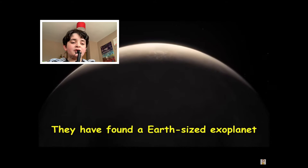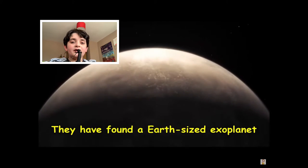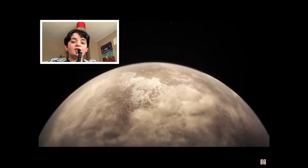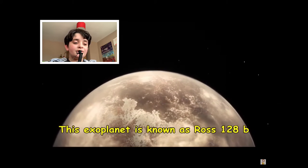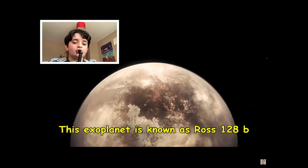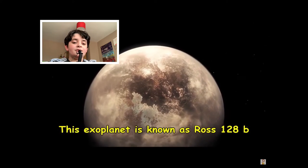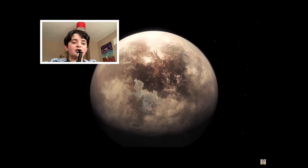So it could be a planet like Earth, and aliens could be on it. This exoplanet is known as Ross128b. Looks like Pluto, actually.